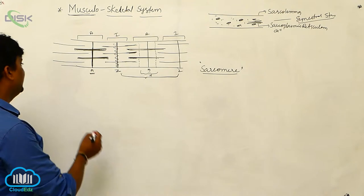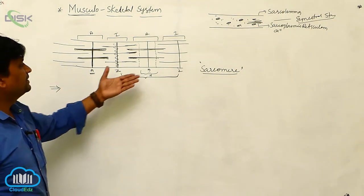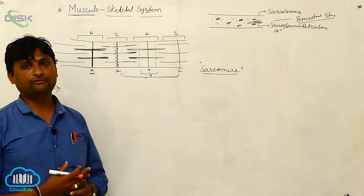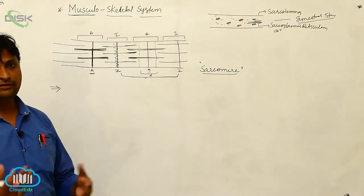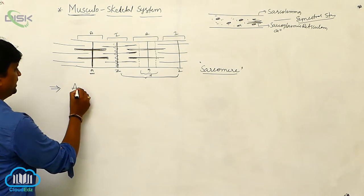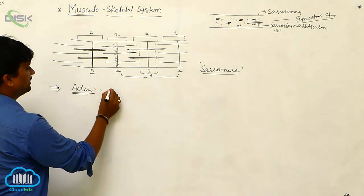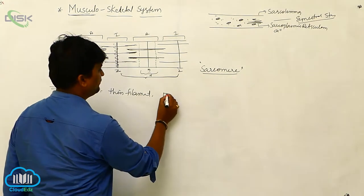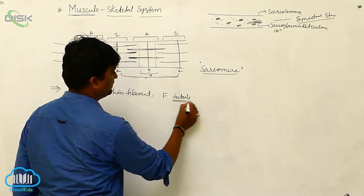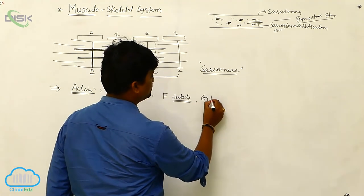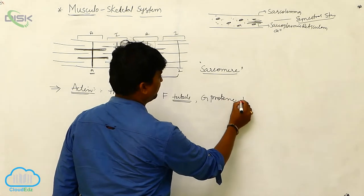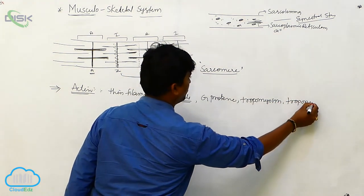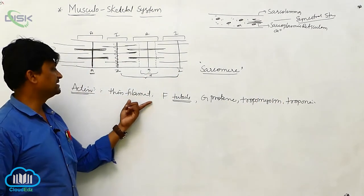Now let us look at the motor unit. Muscle undergoes contraction, and contraction is brought about by different muscle proteins — actin and myosin. First, actin: it is a protein molecule and a thin filament. Actin consists of F-actin tubules. In addition to F-actin, there are globular proteins (G proteins), and also the proteins tropomyosin and troponin are present.